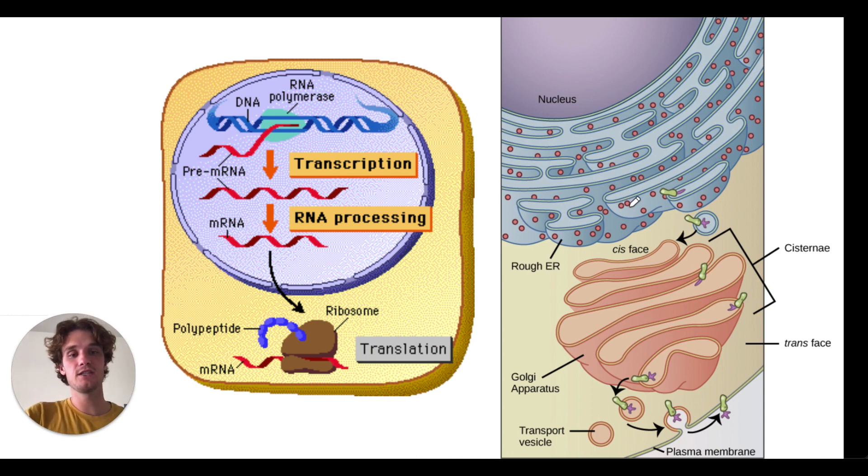Then actually these ribosomes when they make this polypeptide chain that's actually being made on the inside of the endoplasmic reticulum and you can see that it's housed actually in these little vesicles so it hasn't actually hit the cytoplasm yet.